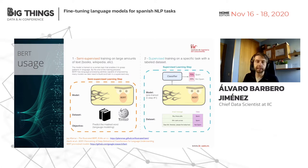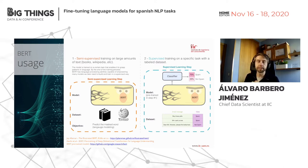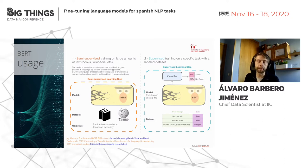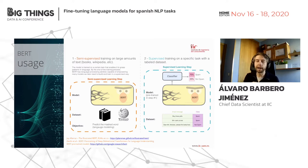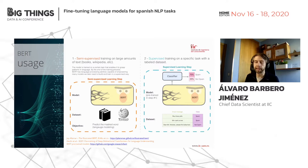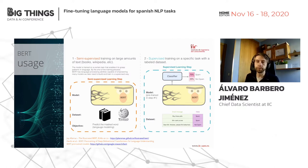First, you take a very large dataset of the language — this doesn't need to be labeled, so you can use all of Wikipedia, books, or internet data. You make the model learn how words are structured in that language. Once the model has learned this — akin to learning how to read — you can fine-tune the same model to your specific NLP problem, like spam classification: take your small labeled dataset and fine-tune the language model for that task.